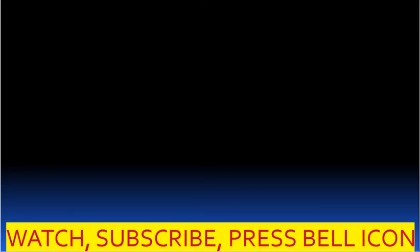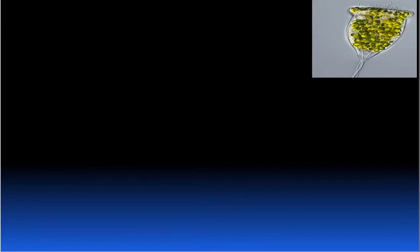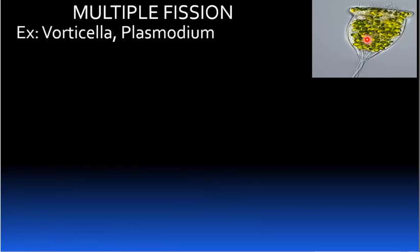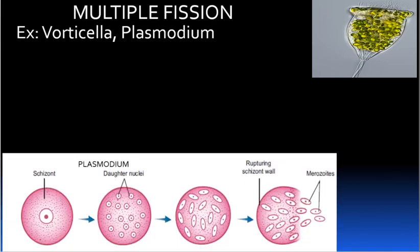First we are going to see about multiple fission. The examples of multiple fission are Vorticella and Plasmodium. Multiple fission means the parent body divides into many similar daughter cells simultaneously.